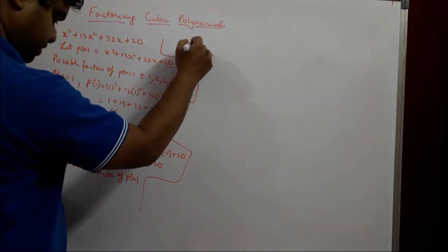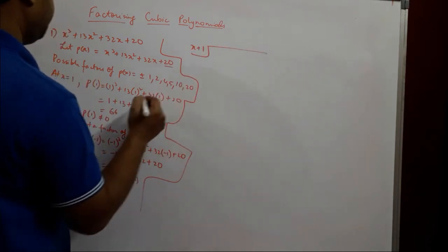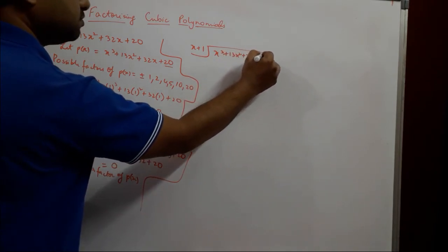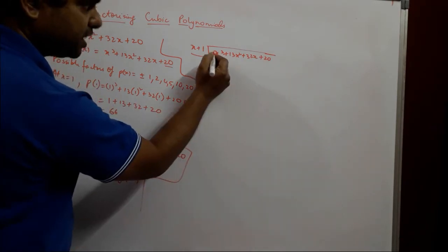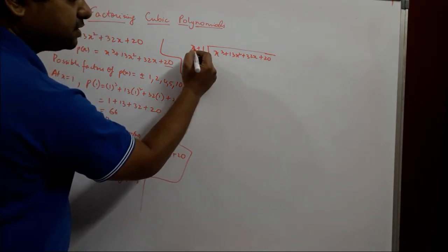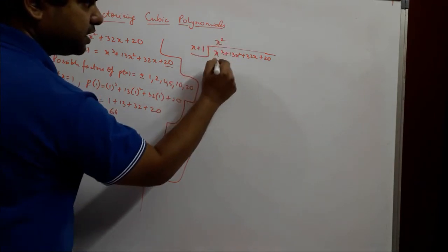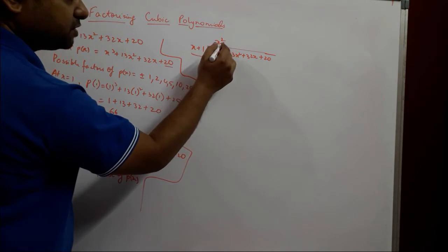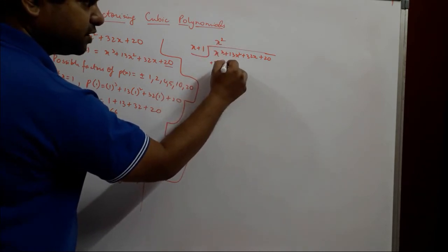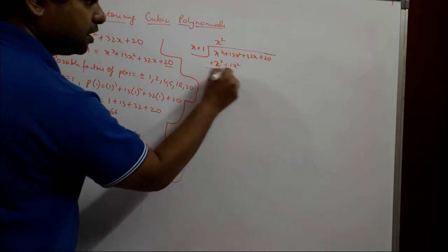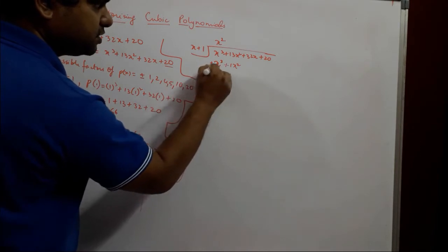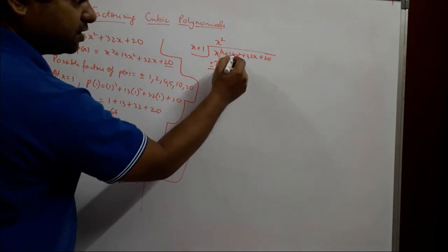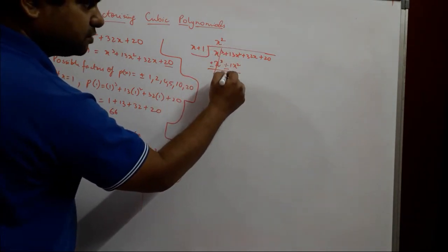We divide x³ + 13x² + 32x + 20 by (x + 1). Since we have x³ in the dividend and x in the divisor, we need x² in the quotient. x² × x gives x³, and x² × 1 gives +x². We change signs to cancel: 13x² − x² gives 12x². We bring down 32x.